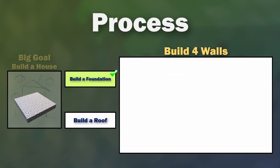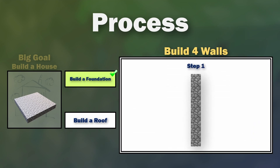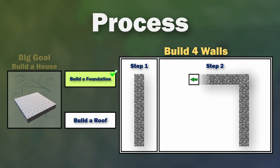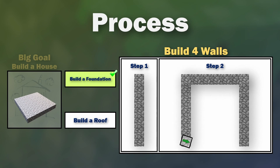We're going to be taking the builder row code from our previous video, taking those different commands and putting them all into one single command that we can use over and over again — this is called a function. Once we've got that function working, we're going to rotate our builder by 90 degrees and repeat that process so that we create the four walls we need for our house.